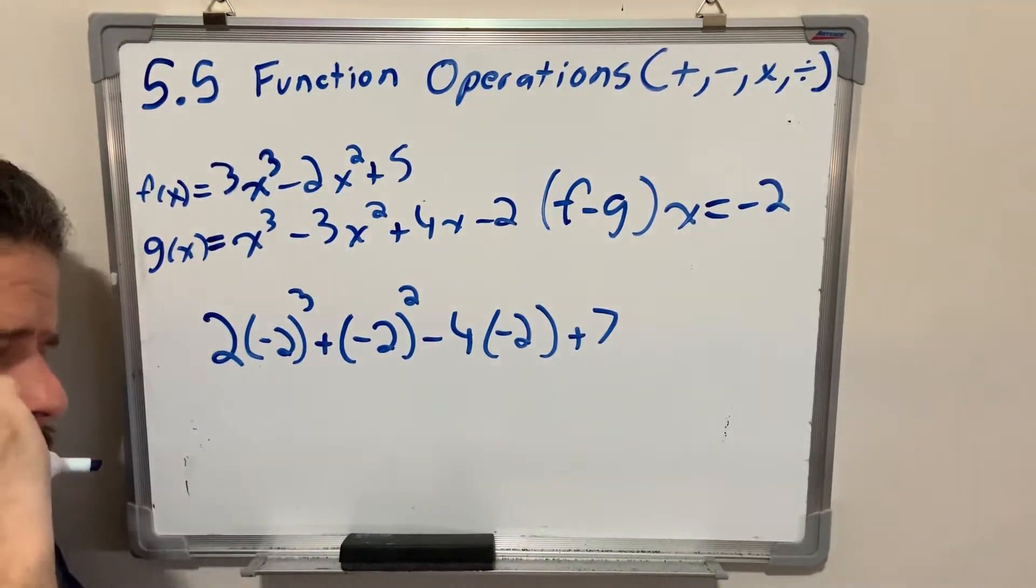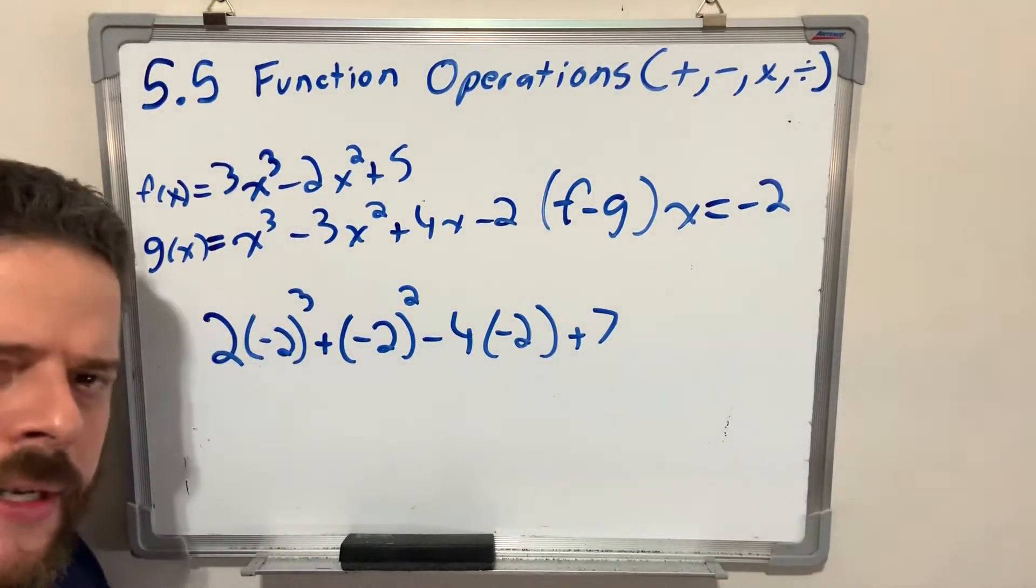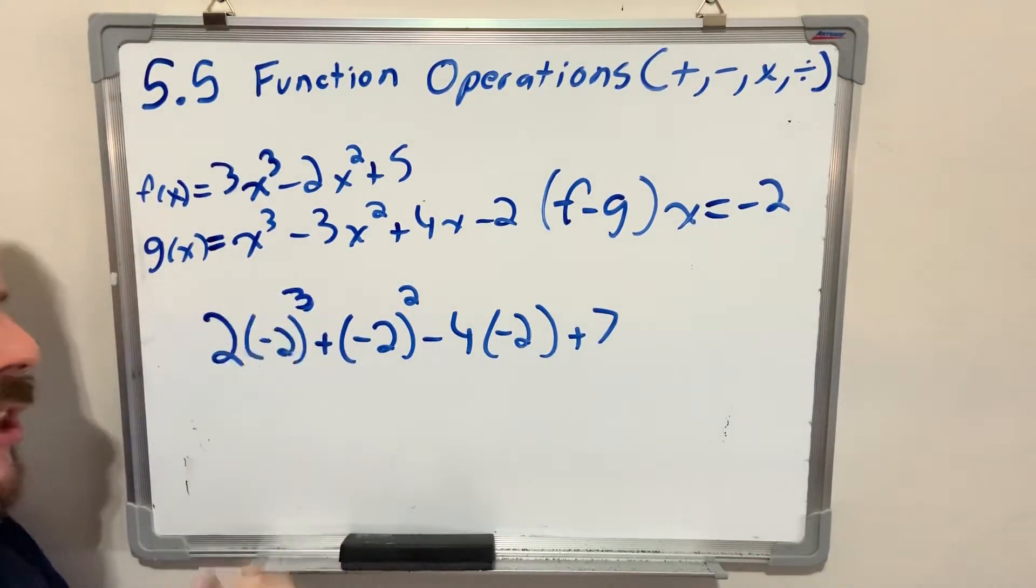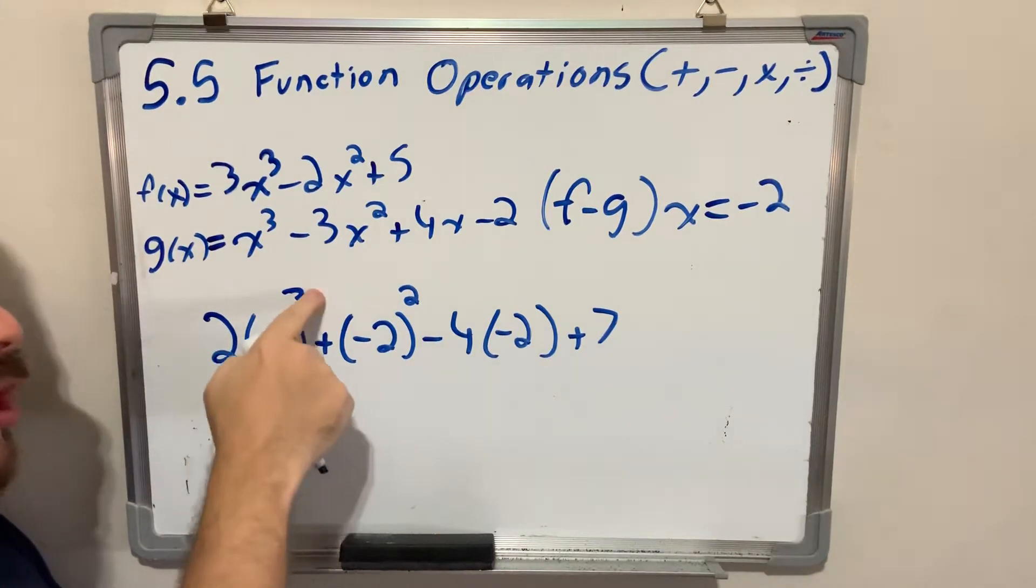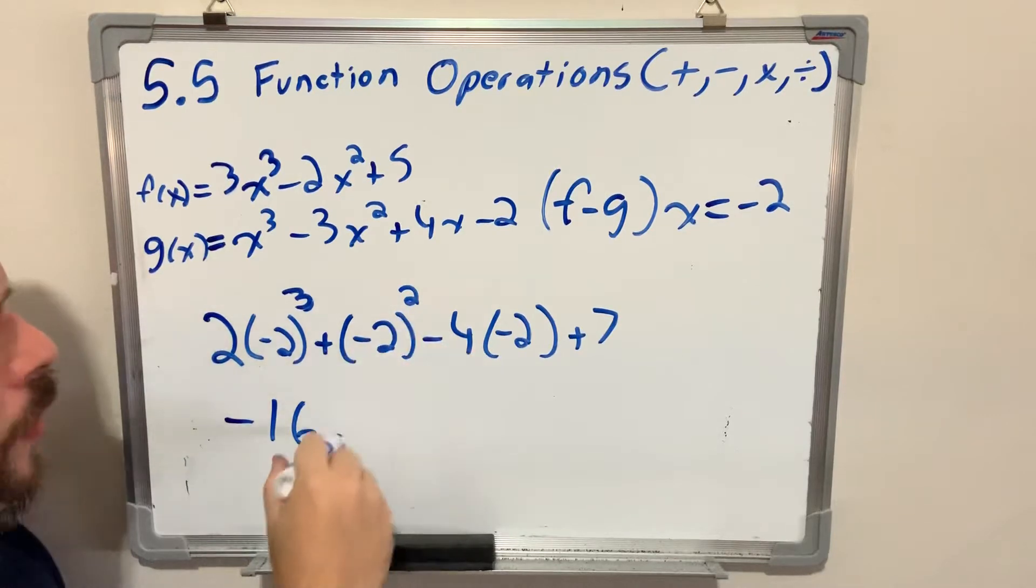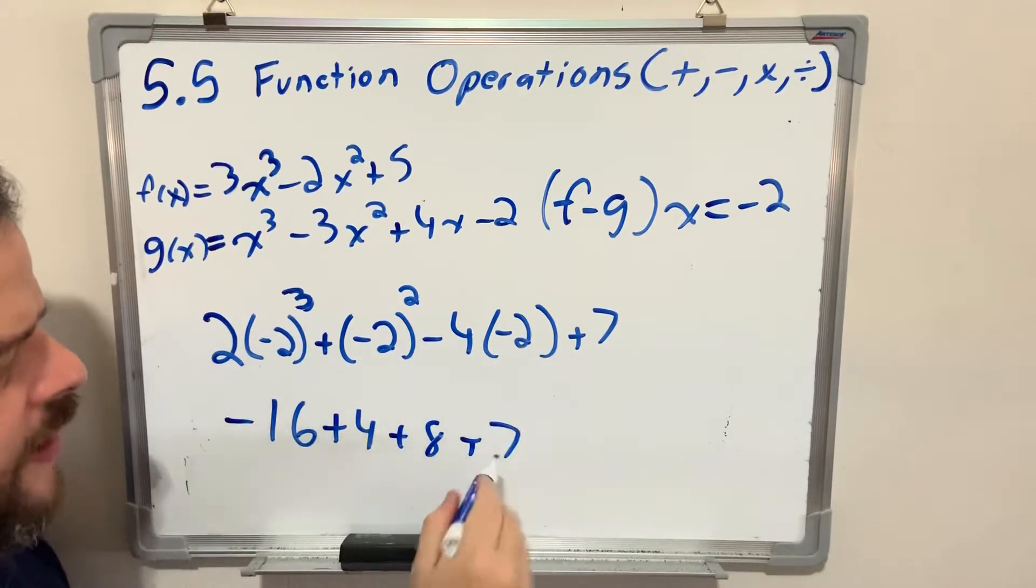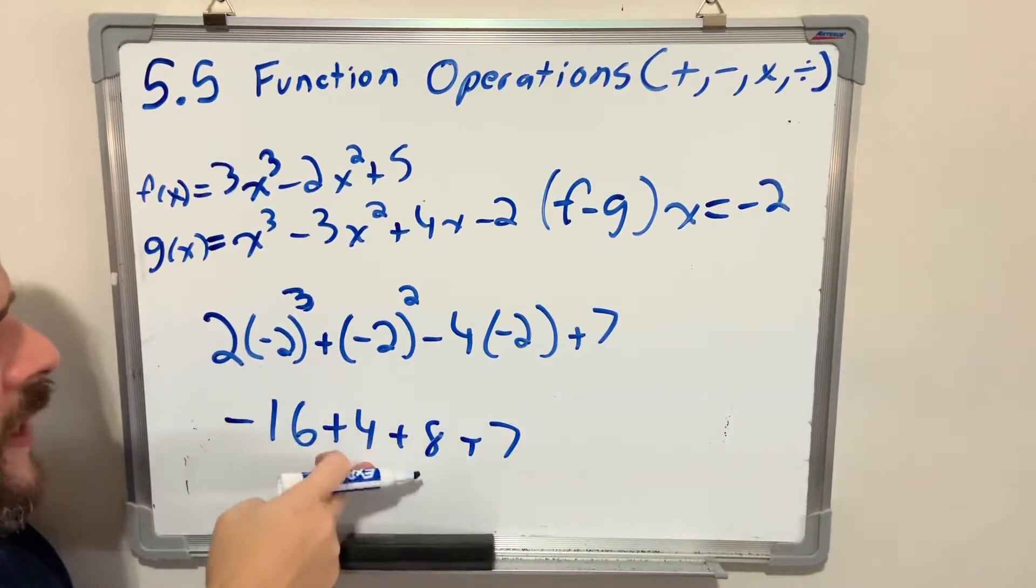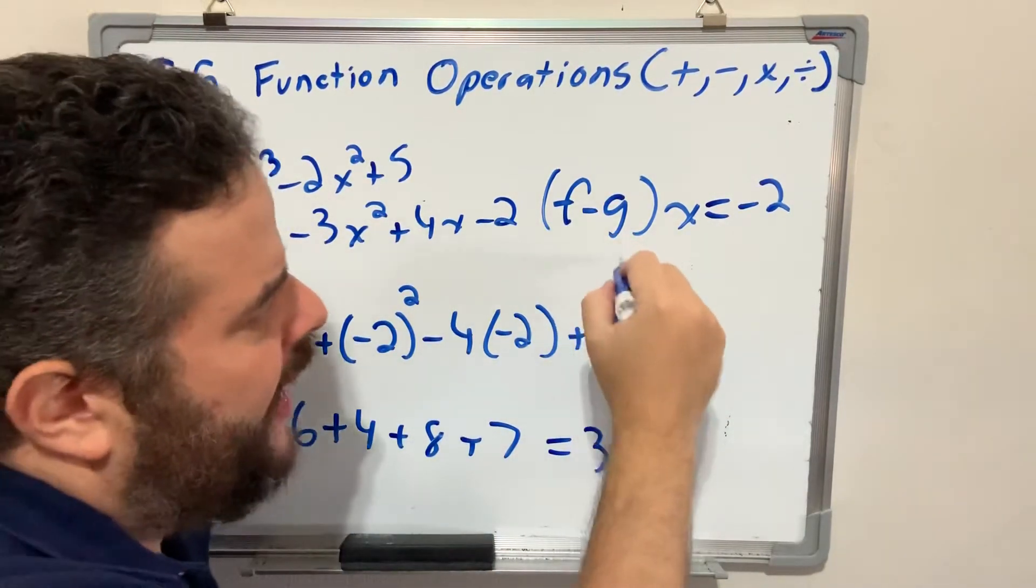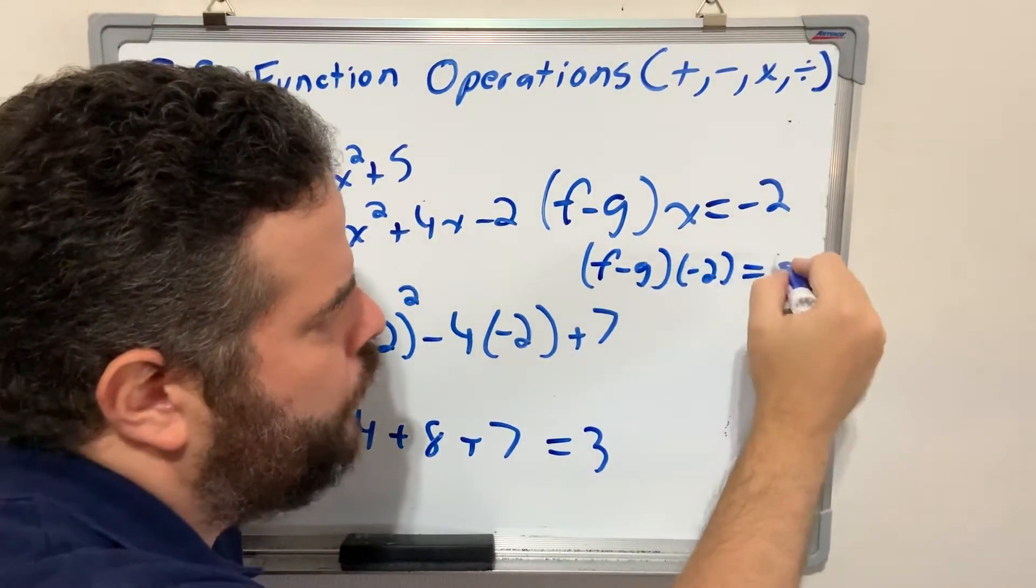PEMDAS. Many students multiply left or right and raise it to that power, you're going to get a crazy big number. Very wrong. PEMDAS. Exponents happen before multiplication. Negative 2 cubed, negative 8 times 2, negative 16. Negative 2 squared, positive 4. Negative 4 times negative 2, positive 8, plus 7. Add them. 15, 19 minus 16 is 3. The answer to f minus g when x equals negative 2 is 3.